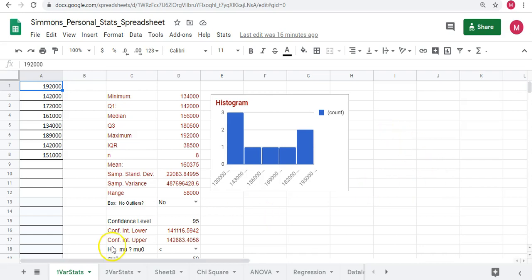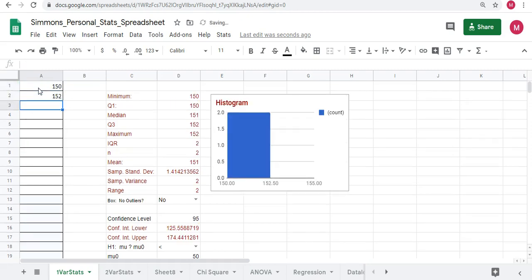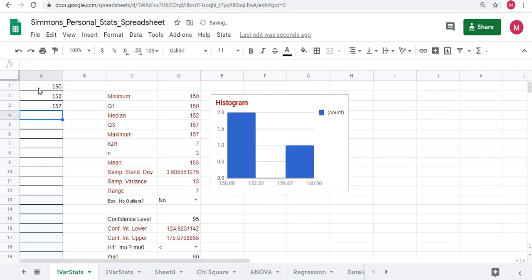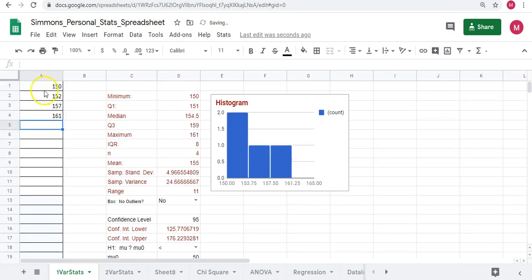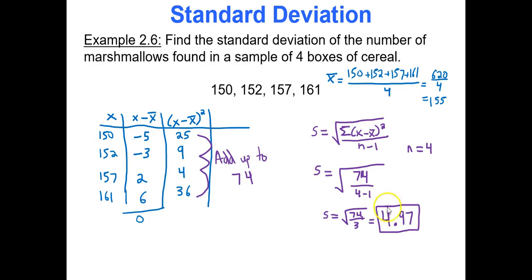In Google Sheets we're going to focus on the one variable stats tab. Clear out my data values and type in my 4 data values. Push enter after each data value—do not use the arrow keys otherwise it will not calculate correctly. I did my 4 data values and I'm looking at sample standard deviation: 4.97. It did all the work for us within the blink of an eye.